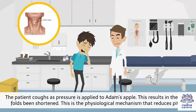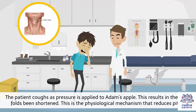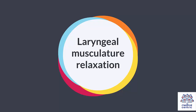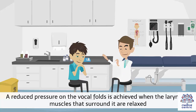Another technique is the cough technique, where the patient coughs as pressure is applied to the Adam's apple. This results in the vocal folds being shortened, which is the physiological mechanism that reduces pitch. Laryngeal musculature relaxation is another approach, where a reduced pressure on the vocal folds is achieved when the laryngeal muscles that surround it are relaxed.